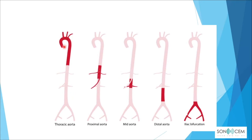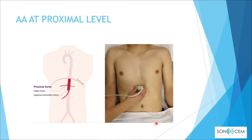For the abdominal aorta scan, we assess the proximal aorta, mid aorta, distal aorta, and iliac bifurcation. To image the abdominal aorta completely, we need four different main views: the proximal level, mid level, distal level, and bifurcation level.